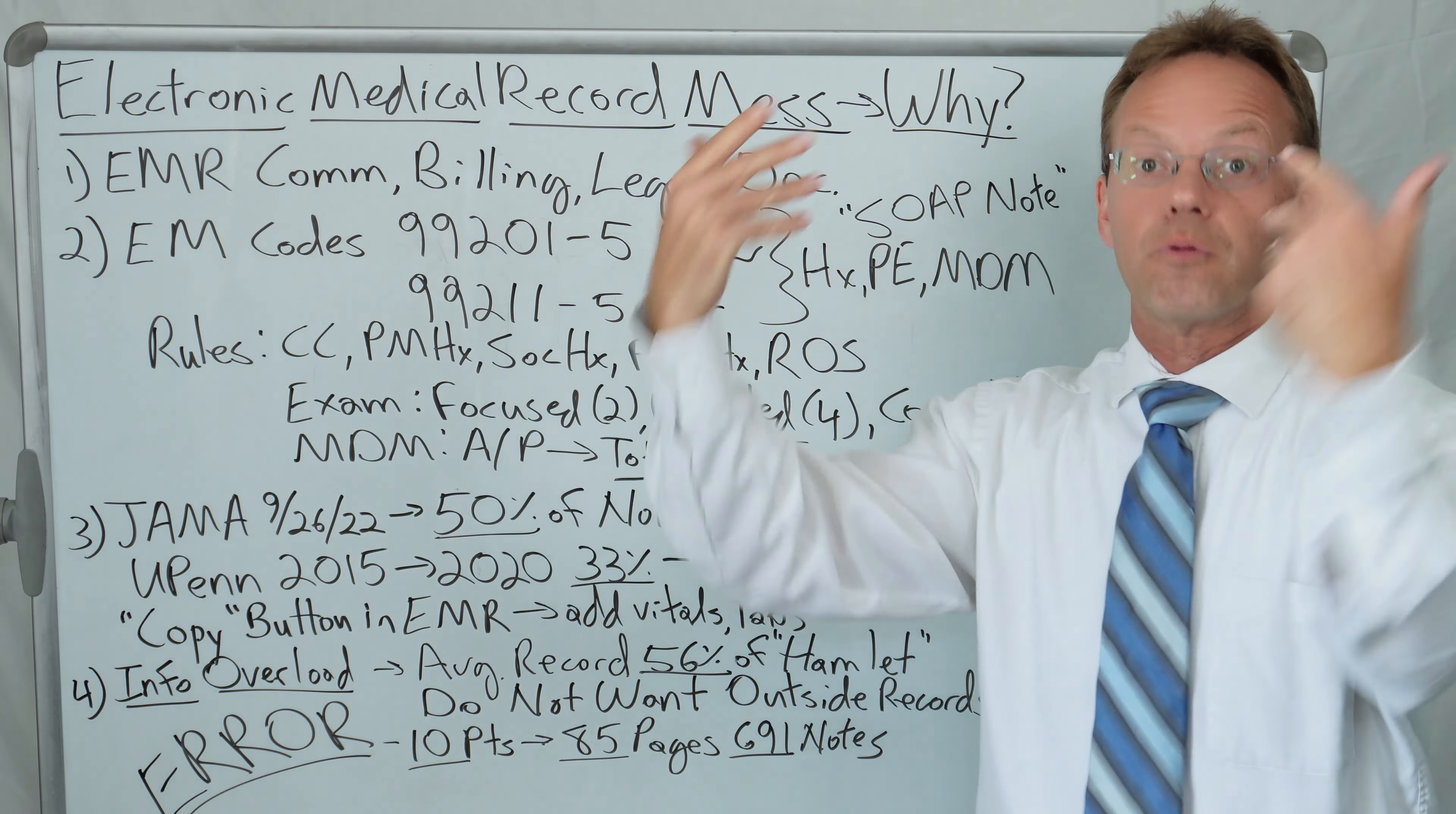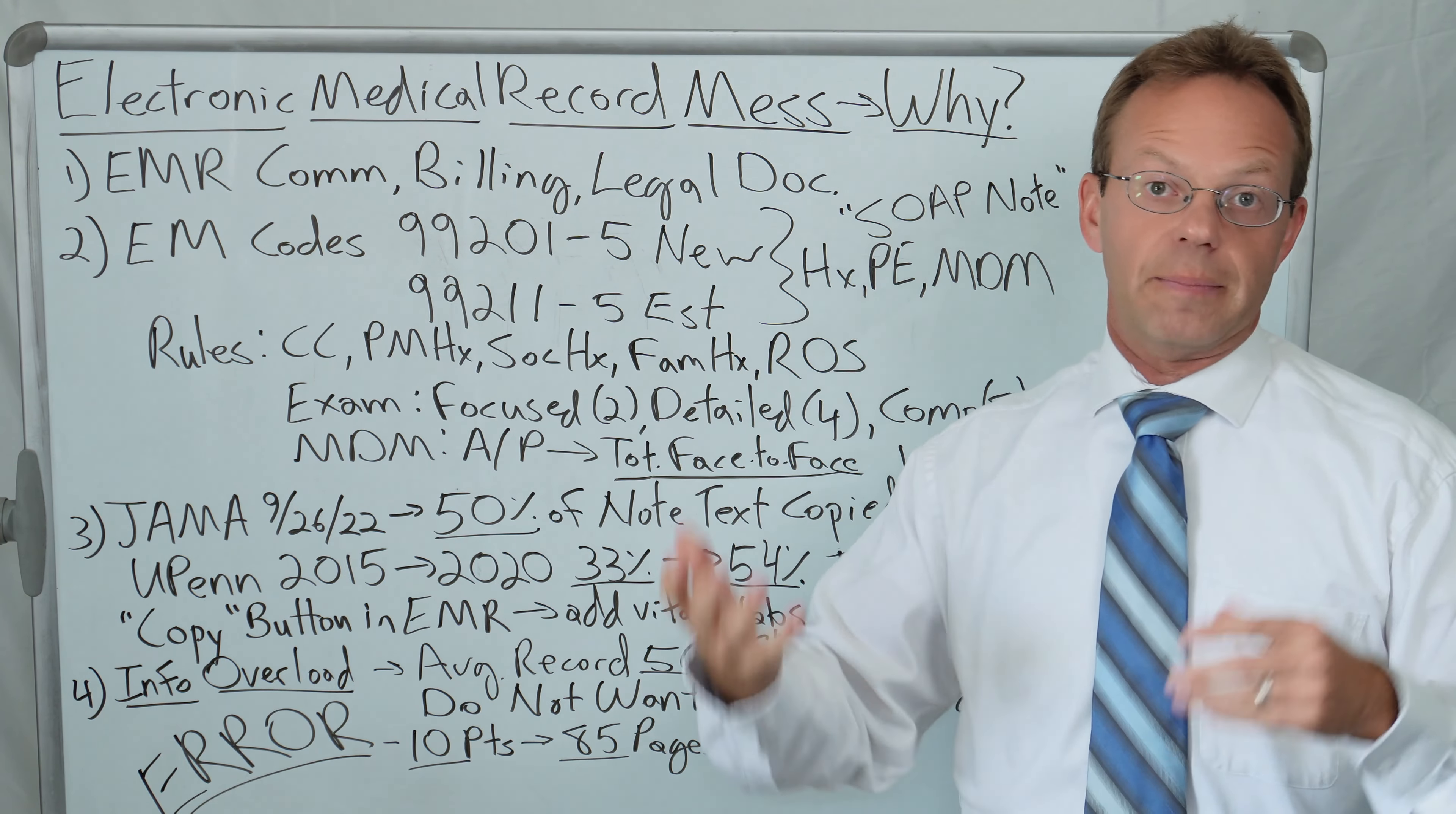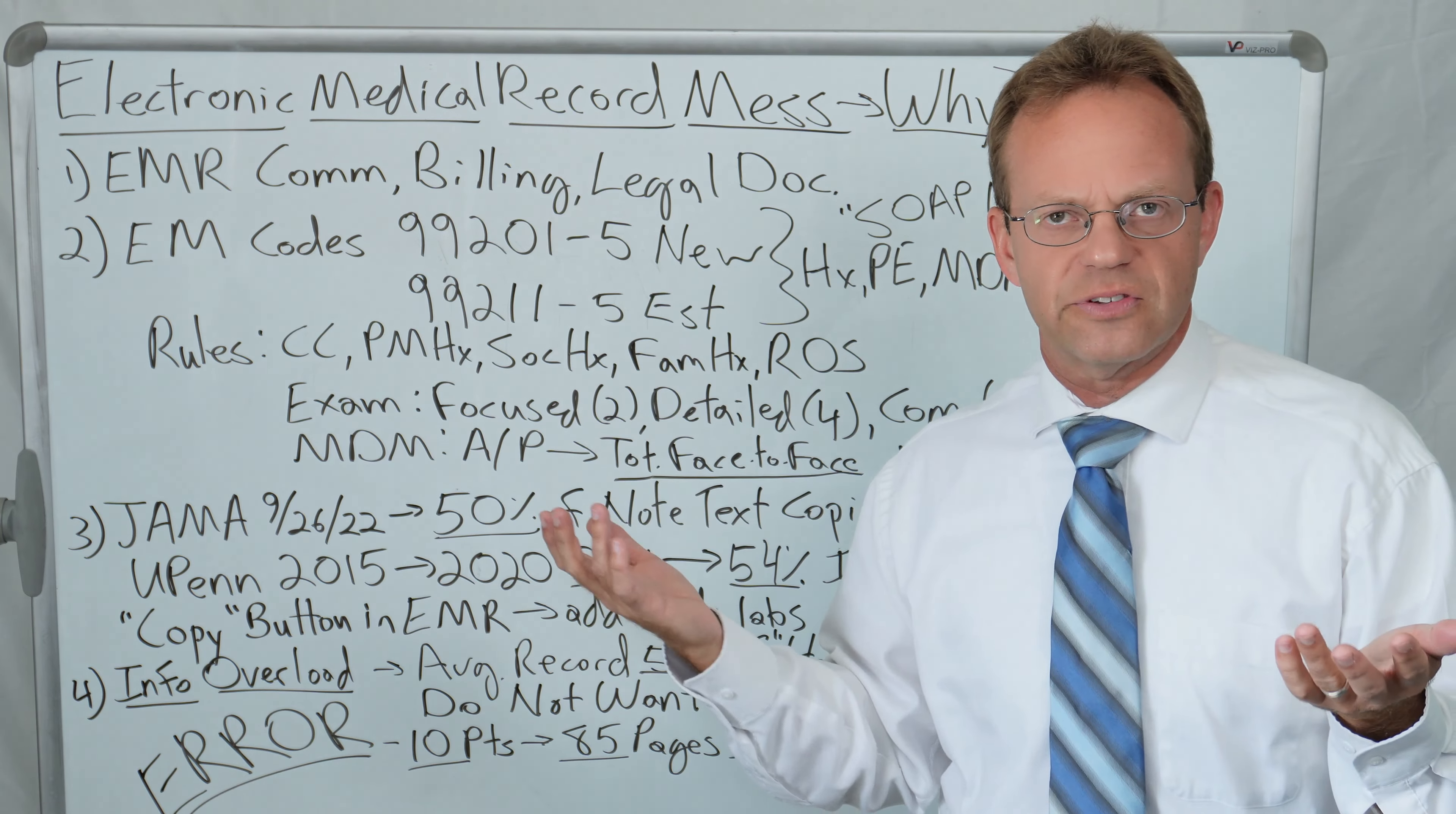Now, there are specific sub-rules to those rules. The history itself has to have a chief complaint. It has to have a past medical history, a social history, a family history. And it has to have a review of systems where you're like, okay, you're coming in for your sore throat, but I'm going to ask you, are you having any problems with headaches? Are you having any problems with rash? Are you having any problems with constipation or diarrhea?